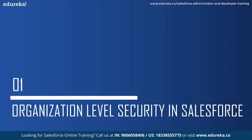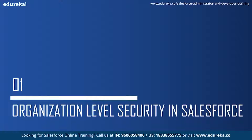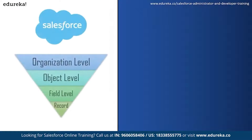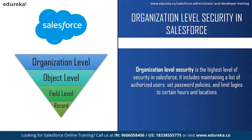What is organization level security in Salesforce? There are four levels of security in Salesforce: organization level security, object level security, field level security, and record level security. Organization level security is the highest level. It includes maintaining a list of authorized users, setting password policies, and limiting logins to certain hours and locations.